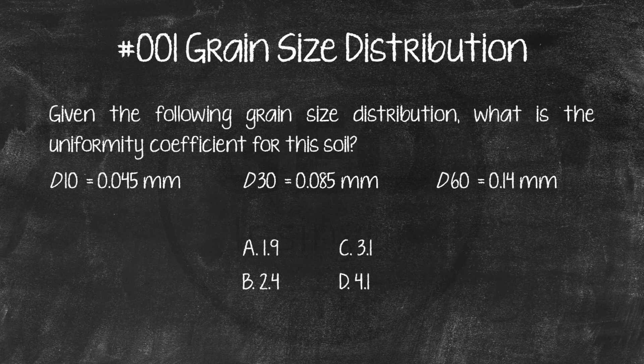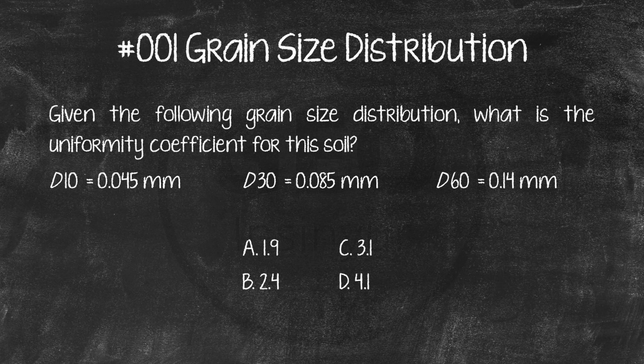Given the following grain size distribution, what is the uniformity coefficient for this soil? D10 equals 0.045 millimeters. D30 equals 0.085 millimeters. D60 equals 0.14 millimeters. A. 1.9. B. 2.4. C. 3.1. D. 4.1.